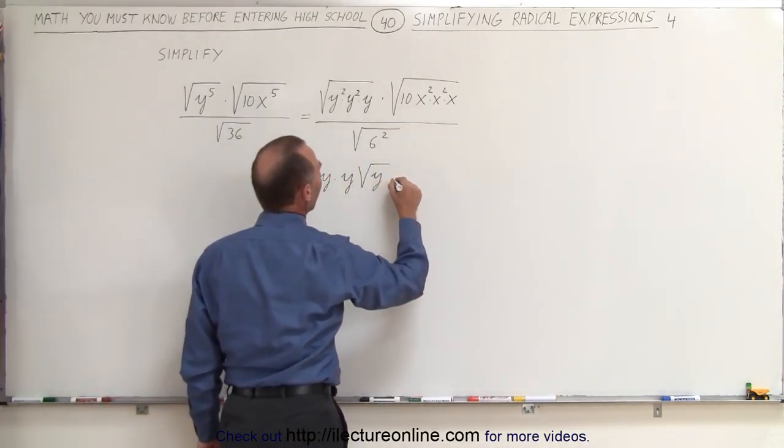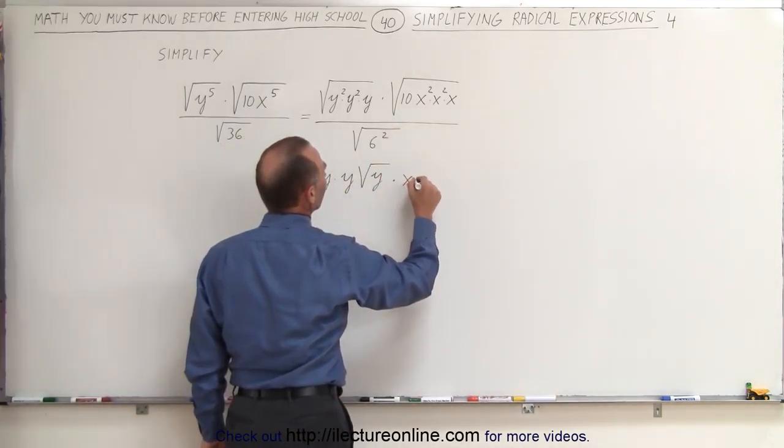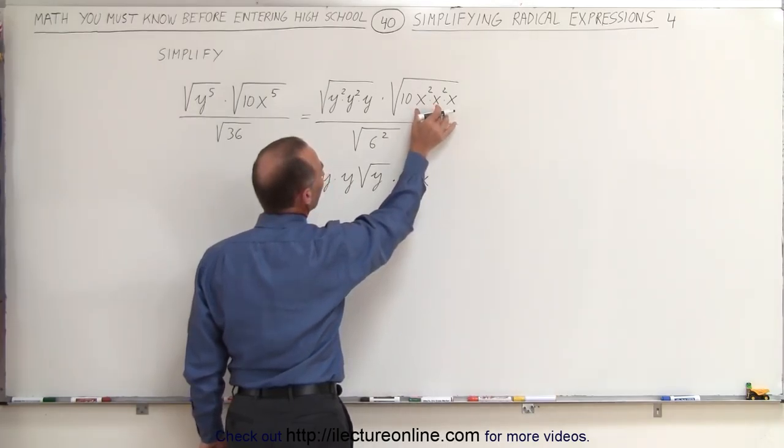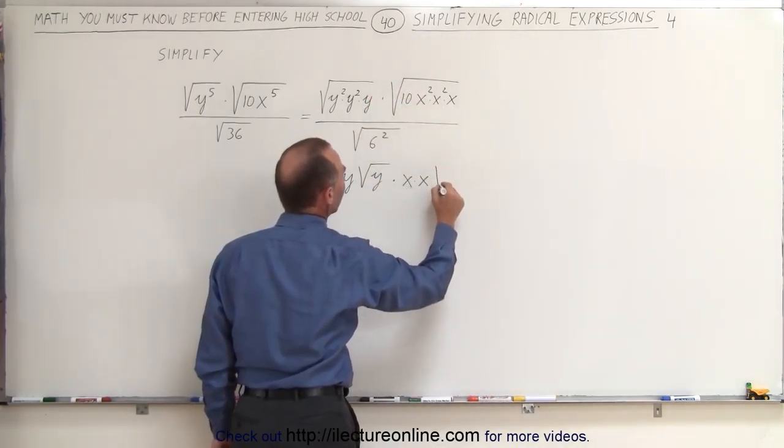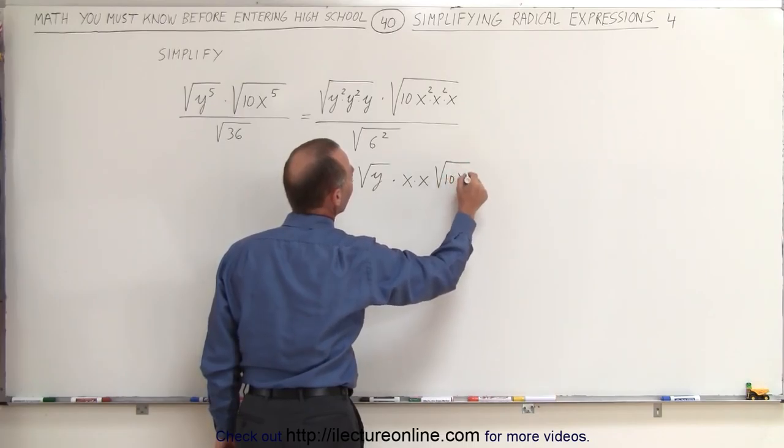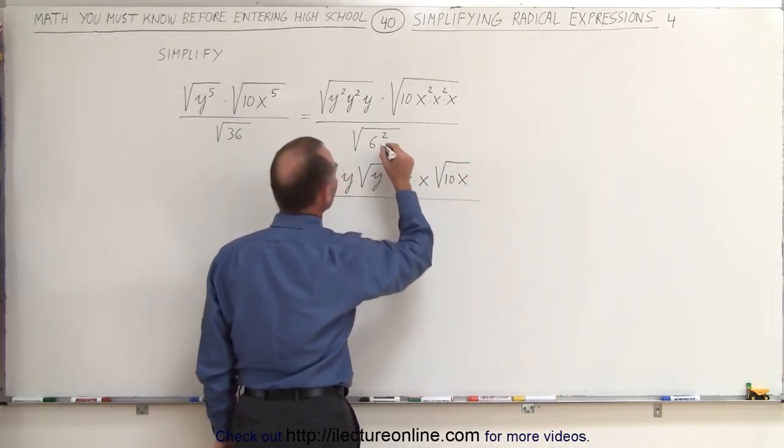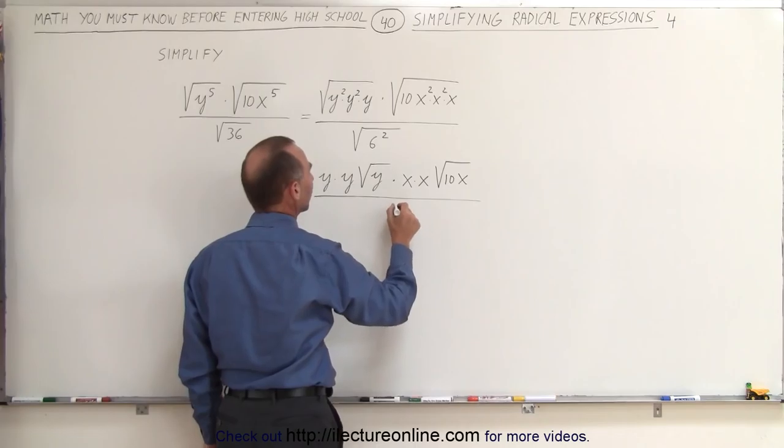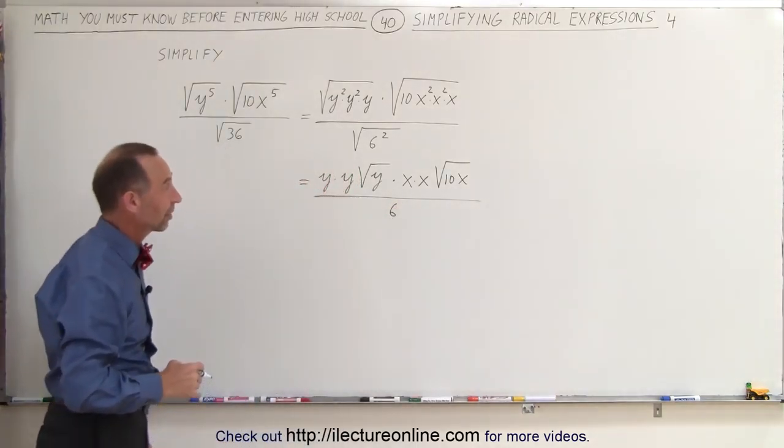Same over here: times x times x, because we can take those outside the radical sign, but 10 times x needs to stay in, times 10 times x. In the denominator, we can take the 6 squared out, which becomes 6. The square root of 6 squared is simply 6.